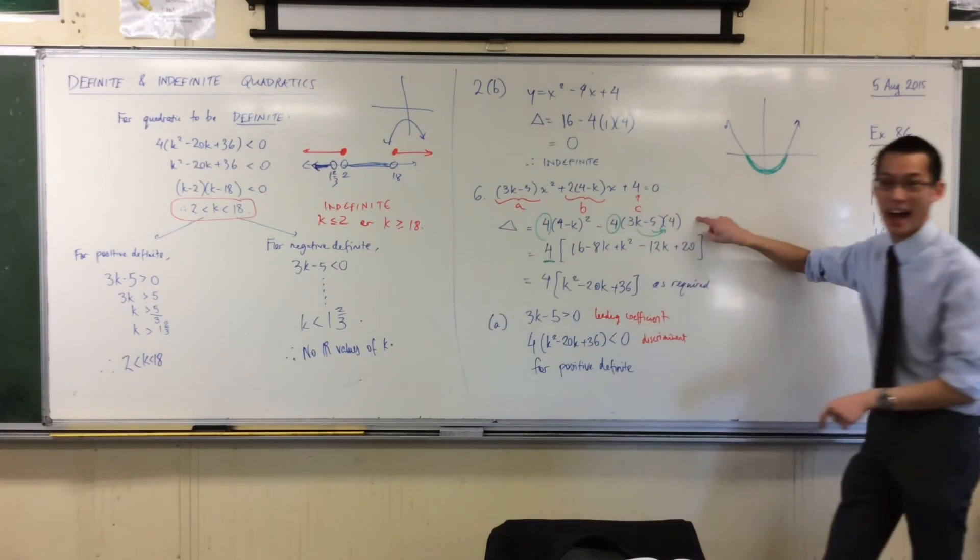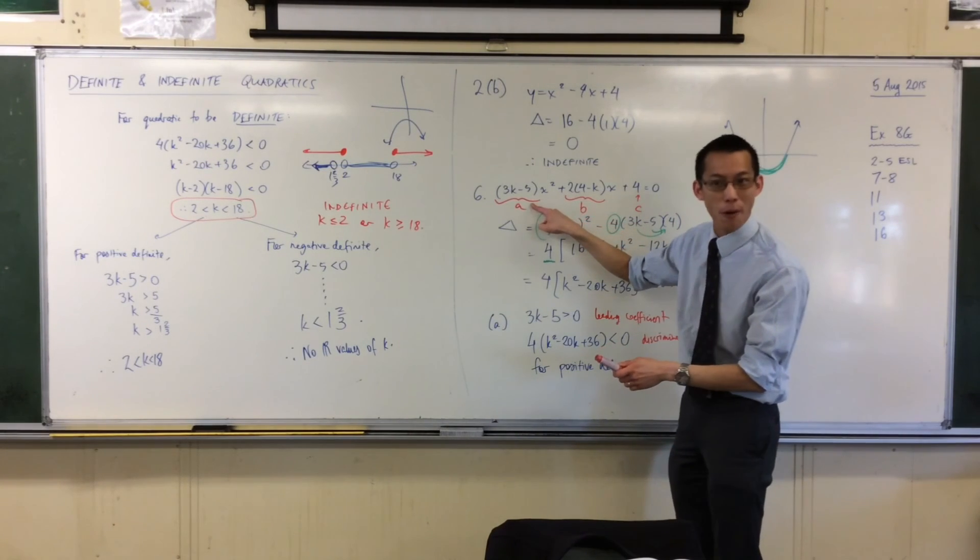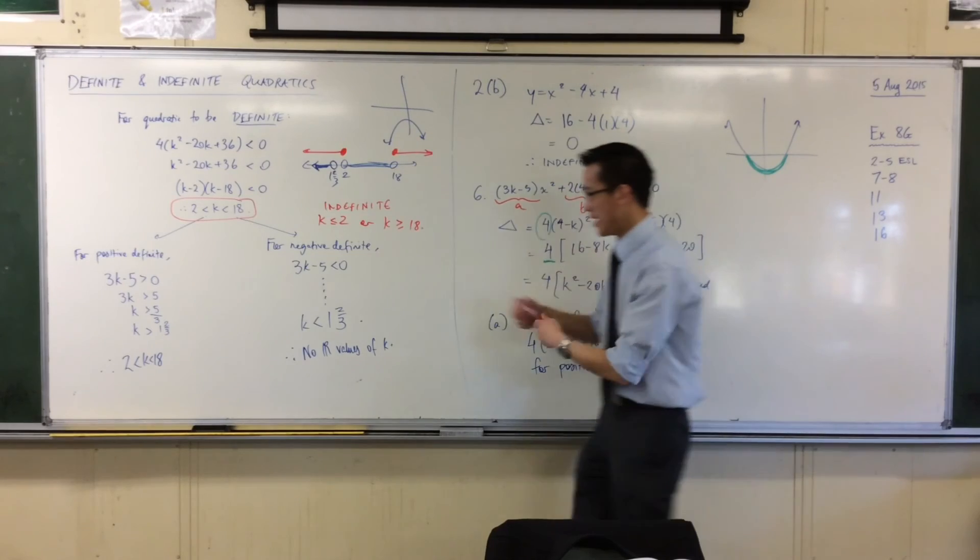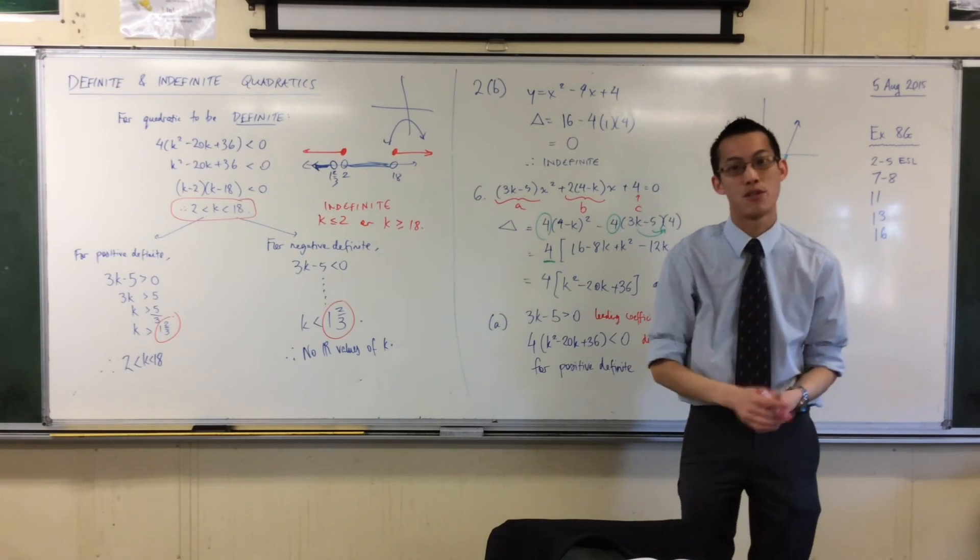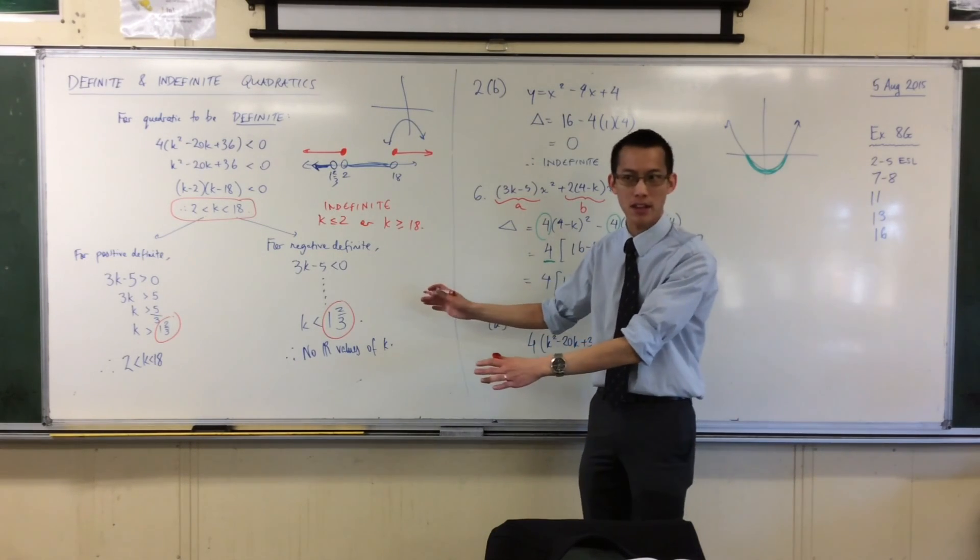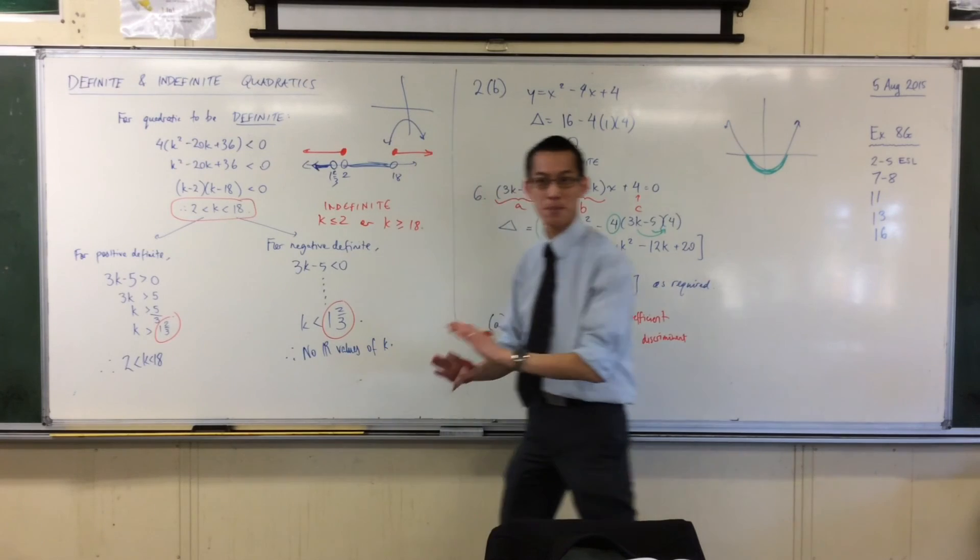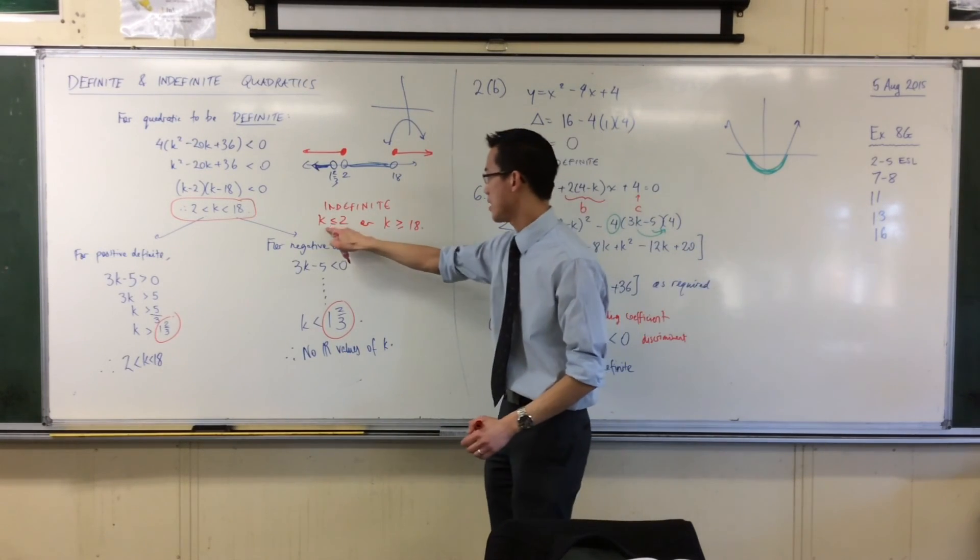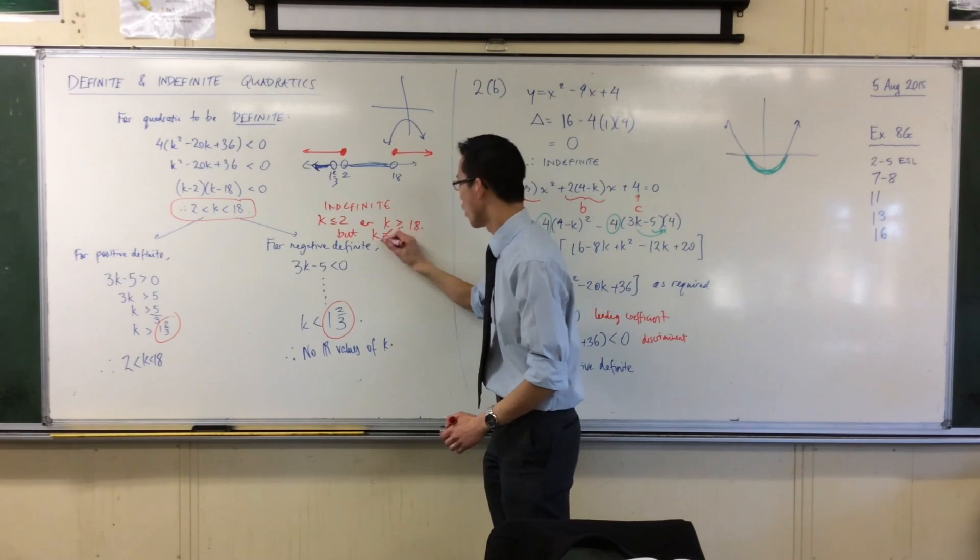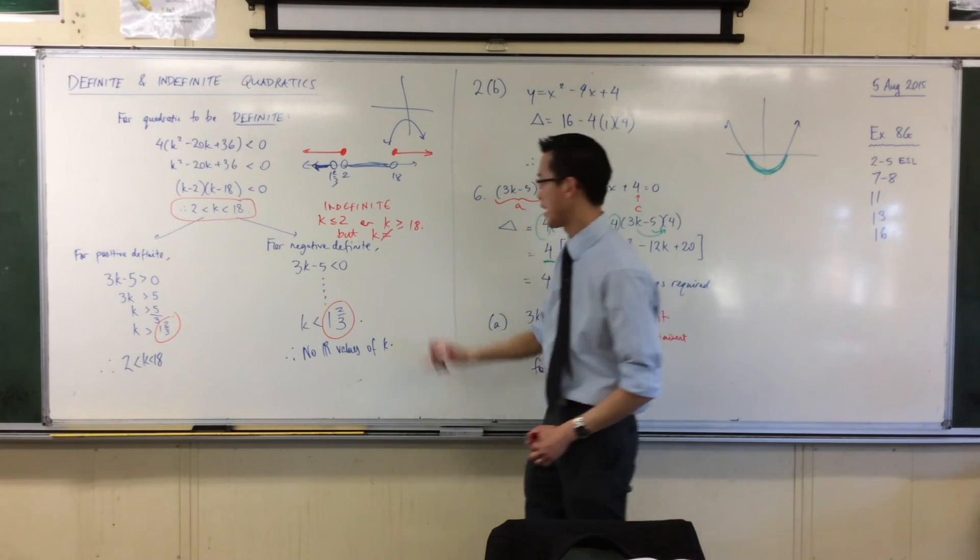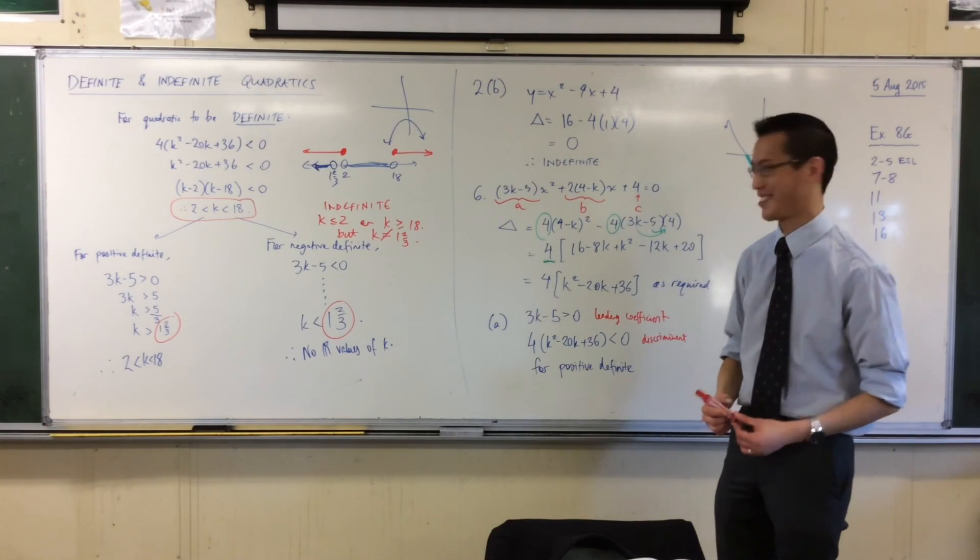Now, what condition would make this guy not a quadratic? Answer, yeah, when this guy is zero. I already know when this is zero. It's this point here, see that? That's the point at which k is equal to, sorry, where a is equal to zero. So that can't be part of the inequality. That's really sneaky, isn't it? You're just concentrating on this, but there's one tiny little value that stops it being not only indefinite, but a quadratic altogether. So this or this, but k cannot equal 5 over 3. That's the value which makes it not indefinite, it makes it not a quadratic, so you can't have that.